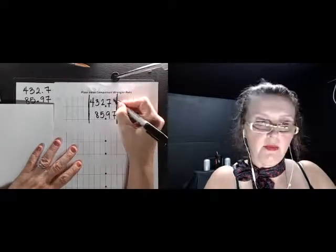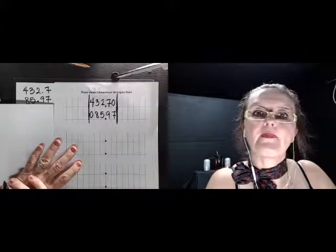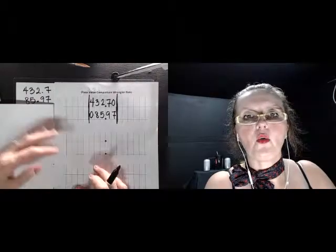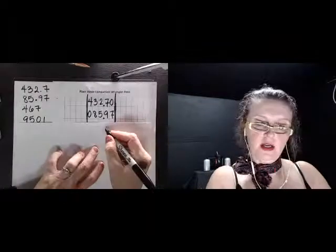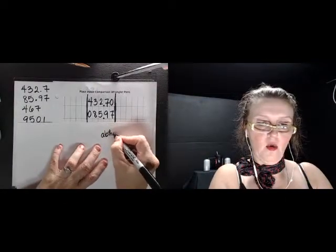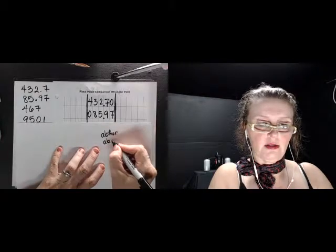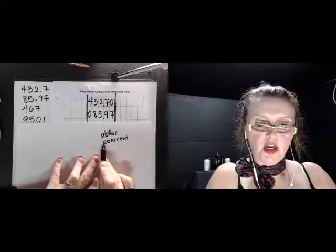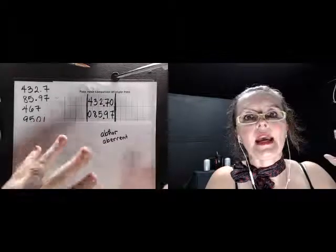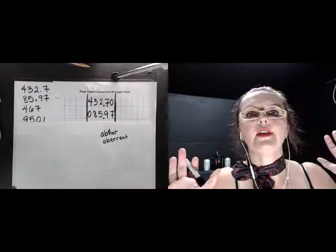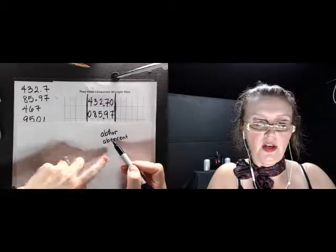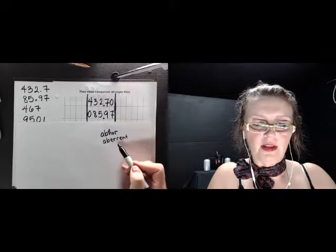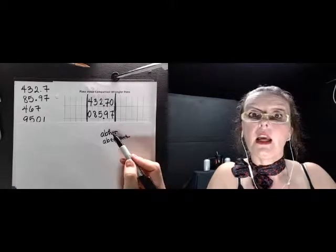And every place else where there's not a number you put a zero. Now you're going to compare just like you were doing alphabetical order. You know, in alphabetical order you do, what were the words that I had, abhor and aberrant. So you look at the first letter and you go they're the same, so you move on to the second letter. They're the same, so you move on to the third letter. You go, ah, E comes before H.